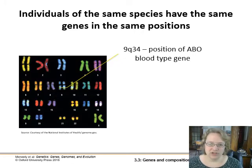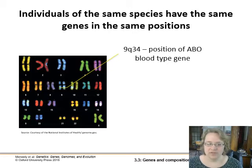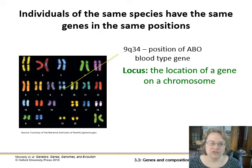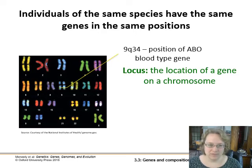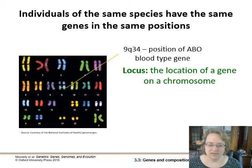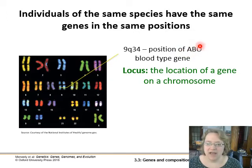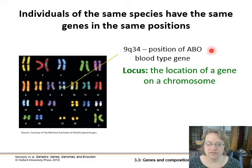Individuals of the same species will have the same genes in the same positions. This is referring to the locus — the location of a gene on a chromosome. You're always going to find gene 9q34 at a particular position on chromosome 9, and that's going to determine your blood type. You might have different alleles — the A, B, or O allele — but you're always going to find that gene at that locus.